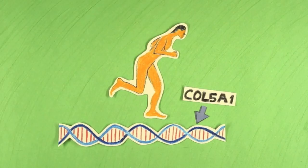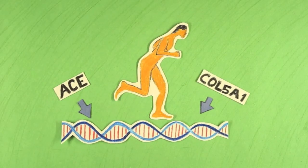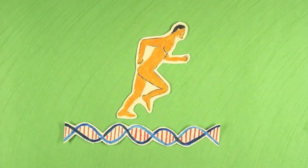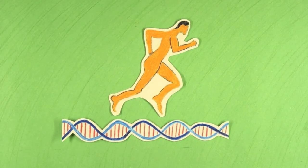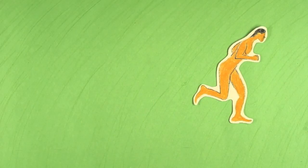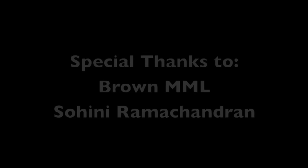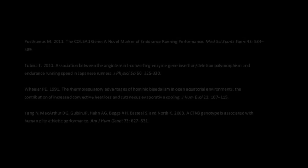Also, genes such as COL5A1 and polymorphisms in the angiotensin-1 converting enzyme gene are associated with endurance running performance. Even today, it is easily visible in our DNA that running is linked to our human genetic identity.